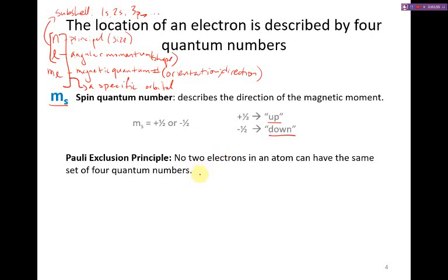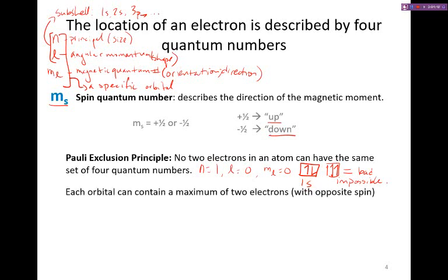So let's say that we describe an orbital as n equals one, l equals zero, m sub l equals zero. Within there, that we might describe as a line, sometimes you might see it as a box, the one s orbital, you can have up or down. You cannot have up and up. This is impossible. And that's essentially saying that those two electrons are occupying the same space.